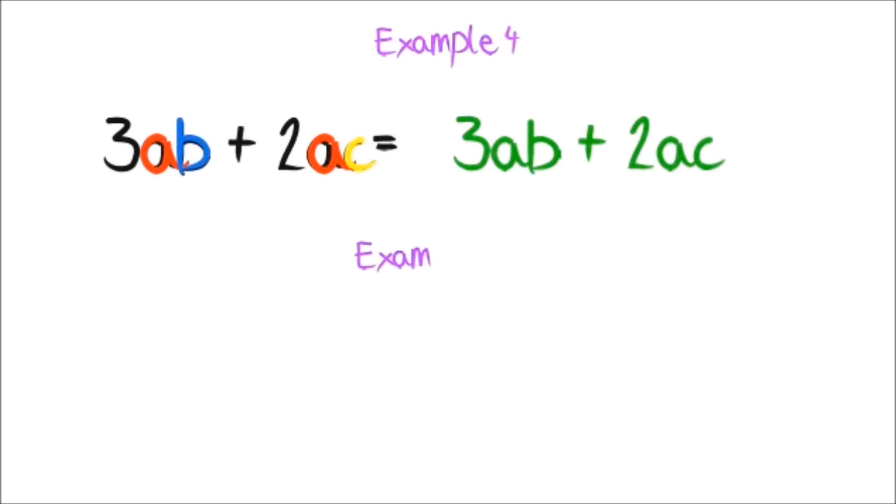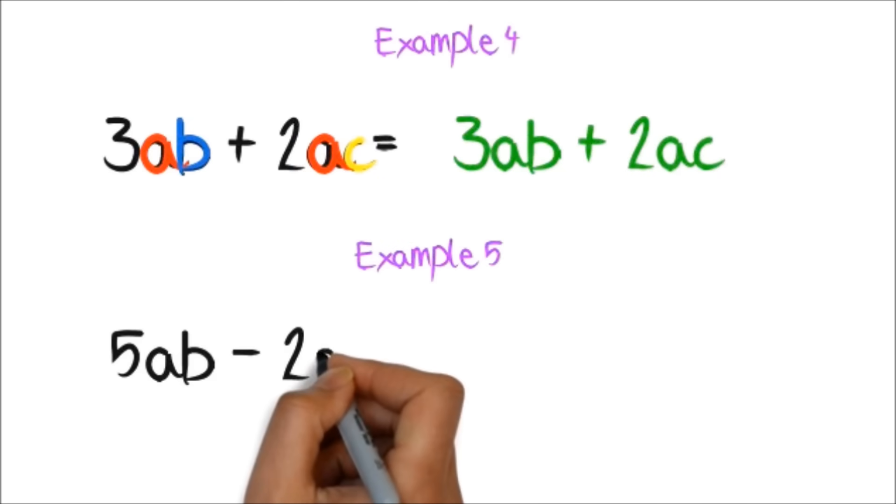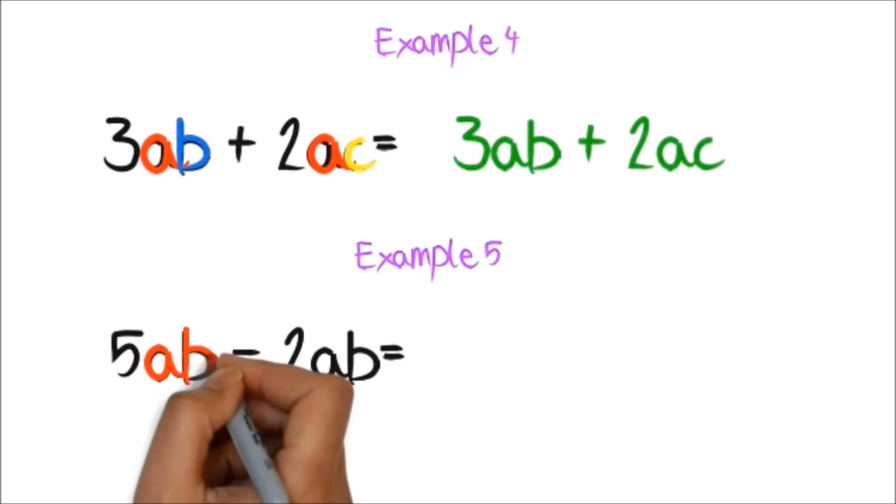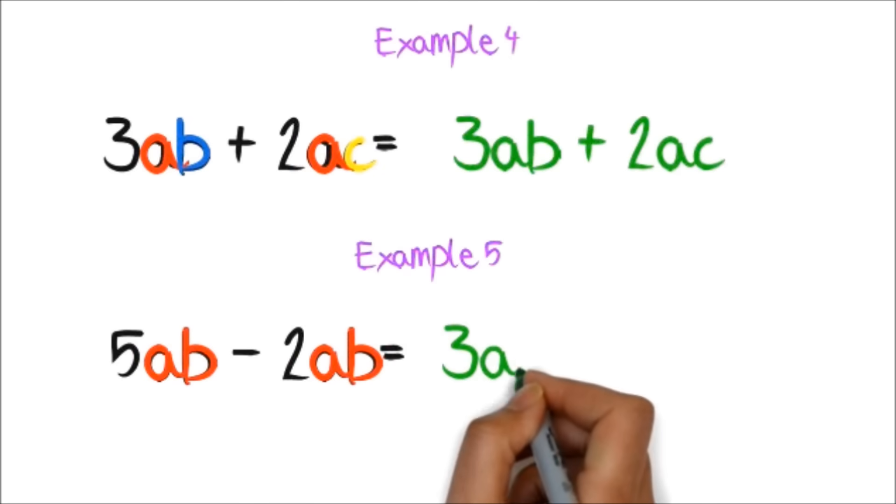Let's try these. Here, since they both have ab after the number, we can subtract. This gives us 3ab. As you can see, if your addition and subtraction is good, this should be easy.